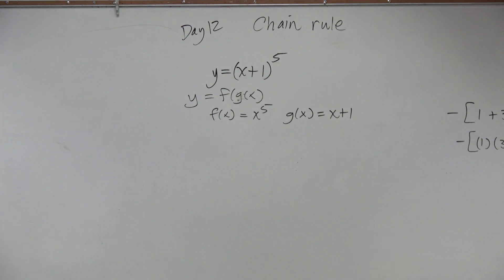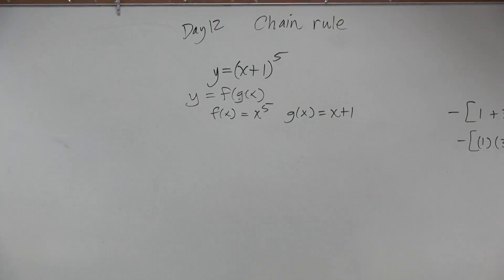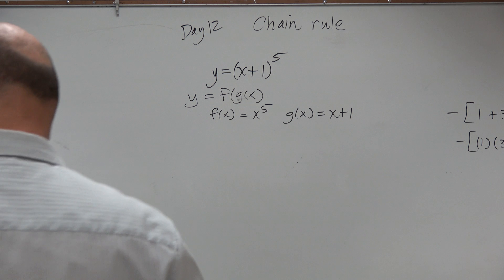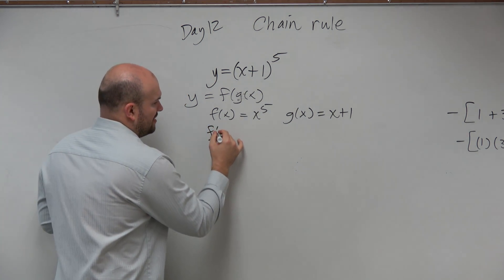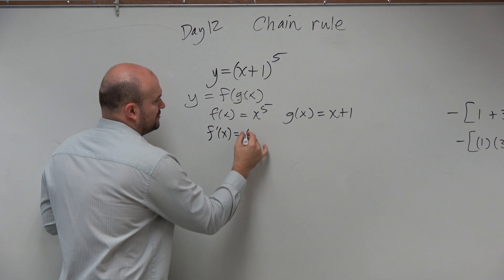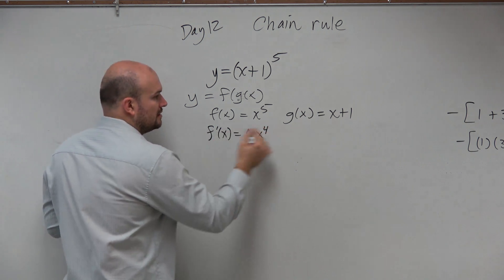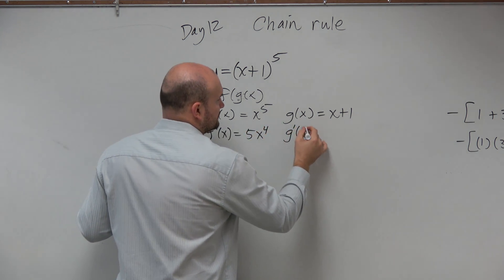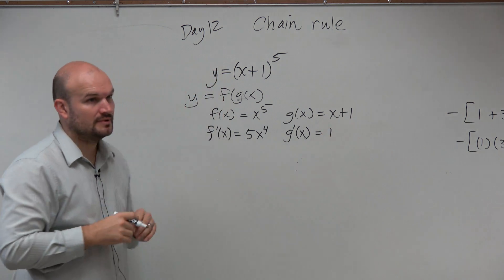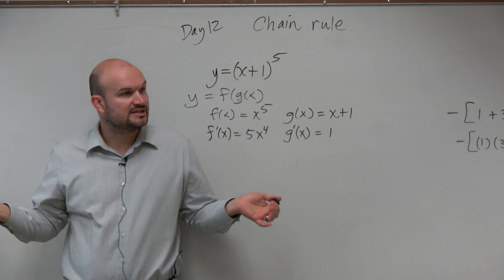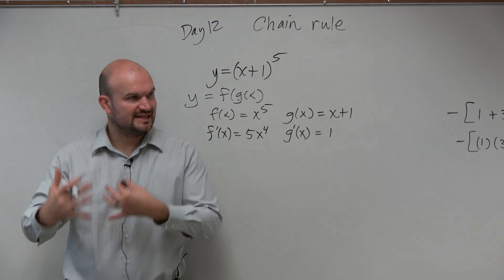Now, to do this slowly as we're learning, what we want to do is find the derivative of each of these. f prime of x is equal to 5x to the fourth, g prime of x is equal to one. We're good with this point, right? So this is the easy kind of breakdown.